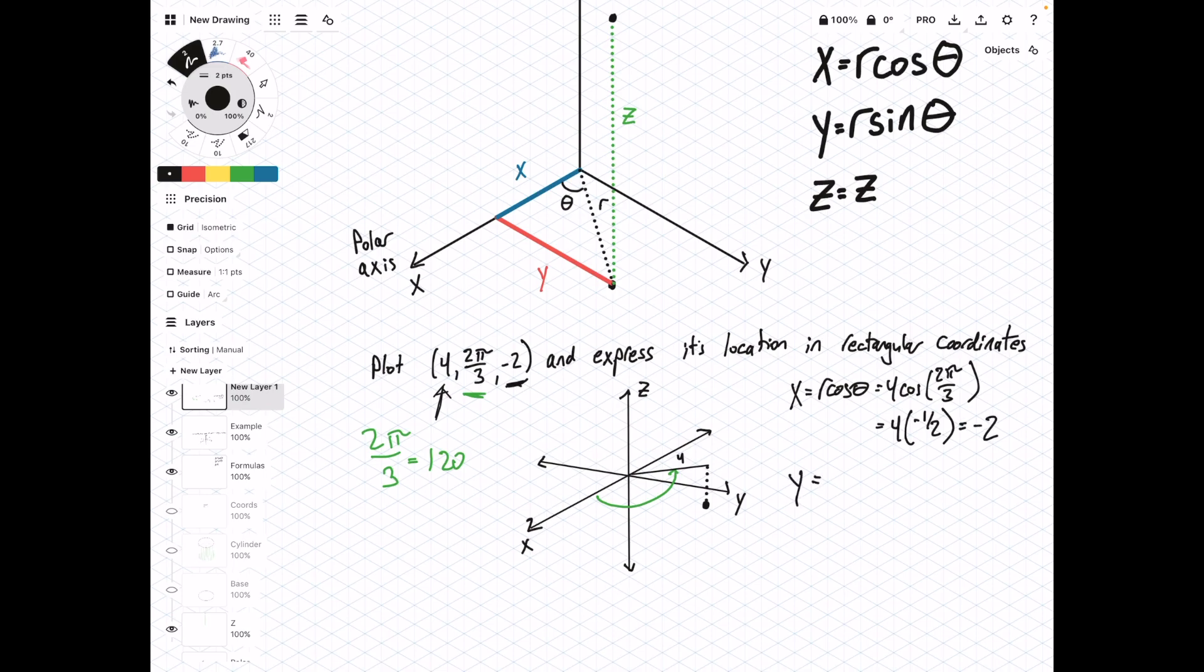For y, we have y equals R sine of theta equals 4 times the sine of 2 pi over 3, which equals 4 times radical 3 over 2 equals 2 radical 3.